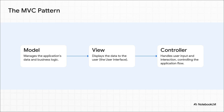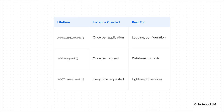You have the Model, which handles all your data and business rules. You have the View, which is the user interface — what the user actually sees. And then you have the Controller, which acts like a traffic cop, managing user input and telling the model and view what to do.